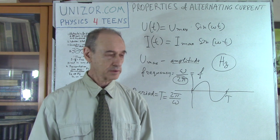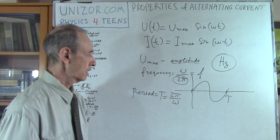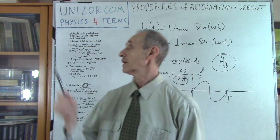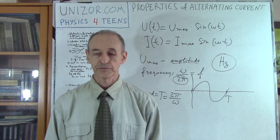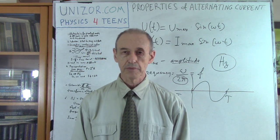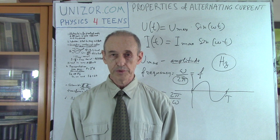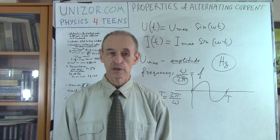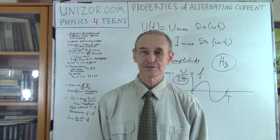That's it for this lecture. I suggest you read the notes — go to unizord.com, choose the Physics for Teens course, that's electromagnetism, and that's where you will find the properties of alternating current. Thank you very much and good luck.